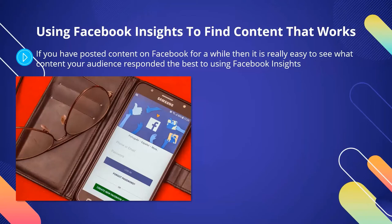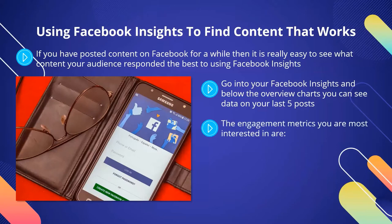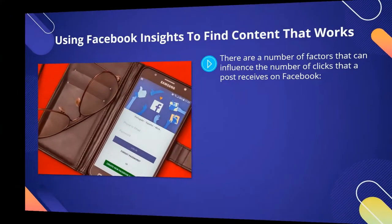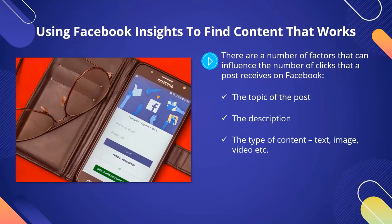Using Facebook Insights to find content that works. If you have posted content on Facebook for a while, then it is really easy to see what content your audience responded the best to using Facebook Insights. By doing this, you can plan ahead to create and post similar content as a way to drive more free traffic from Facebook. Go into your Facebook Insights and below the overview charts, you can see data on your last five posts. Then you can choose to look at the data for all your posts by clicking on See All Posts. You will be able to see the reach of each post and the levels of engagement. The engagement metrics you are most interested in are clicks, comments, and shares. The number of clicks is definitely something that you want to take a good look at, as this is the number of users that clicked through to your website.